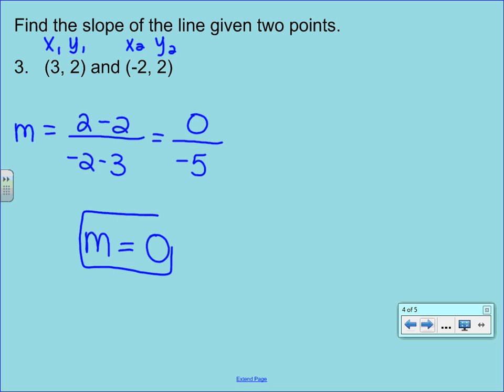Now think back to what we talked about yesterday. A slope of 0 indicates a horizontal line. So anytime you come up with a slope of 0 you automatically know it's a horizontal line. And if you were to graph these two points you would quickly see that they did form a horizontal line.